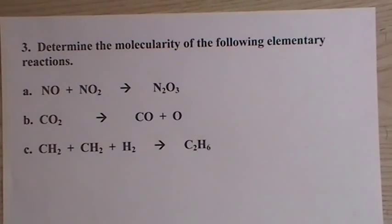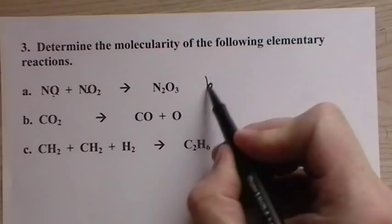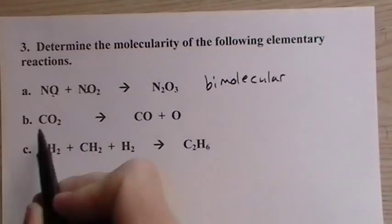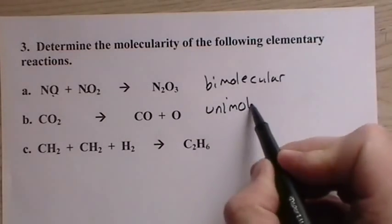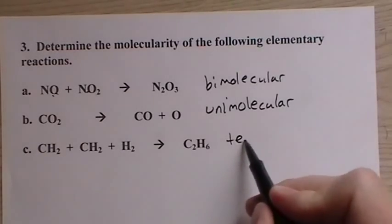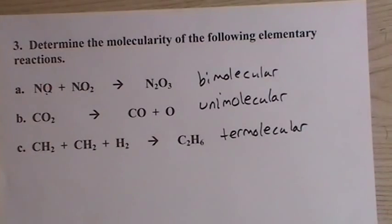Here's another thing that we can do with these mechanisms, is determine the molecularity. All we have to do is count up the number of species. Two species are reacting together, that's bimolecular. One species is falling apart, unimolecular. Three species are reacting together, termolecular, not trimolecular, termolecular. And it doesn't go beyond that.